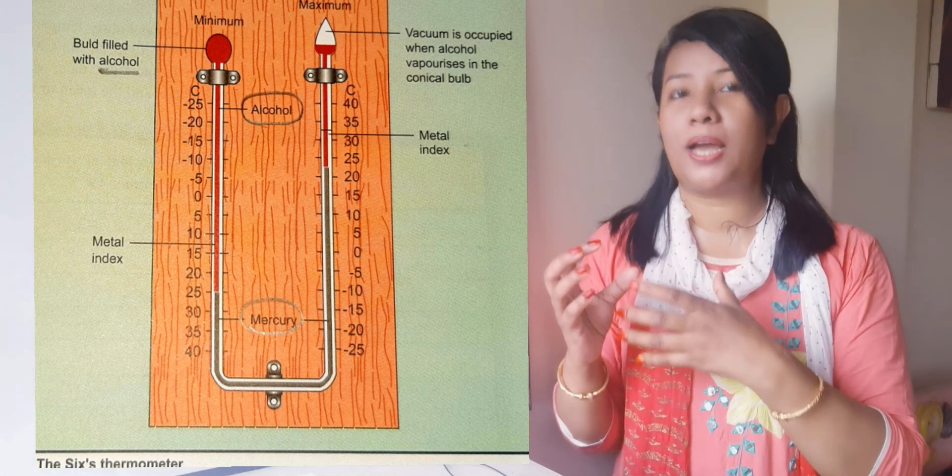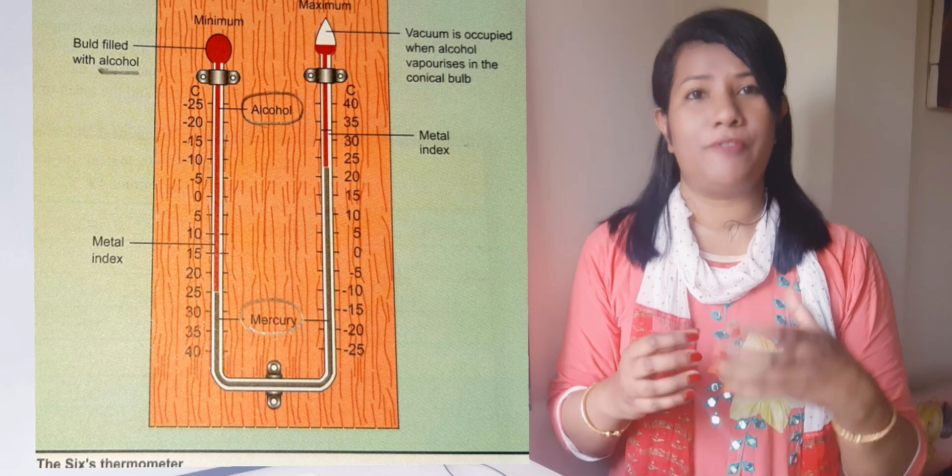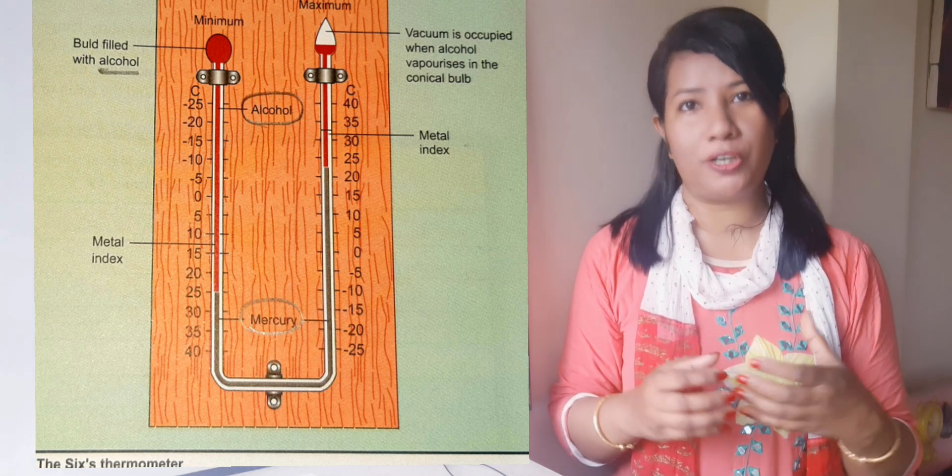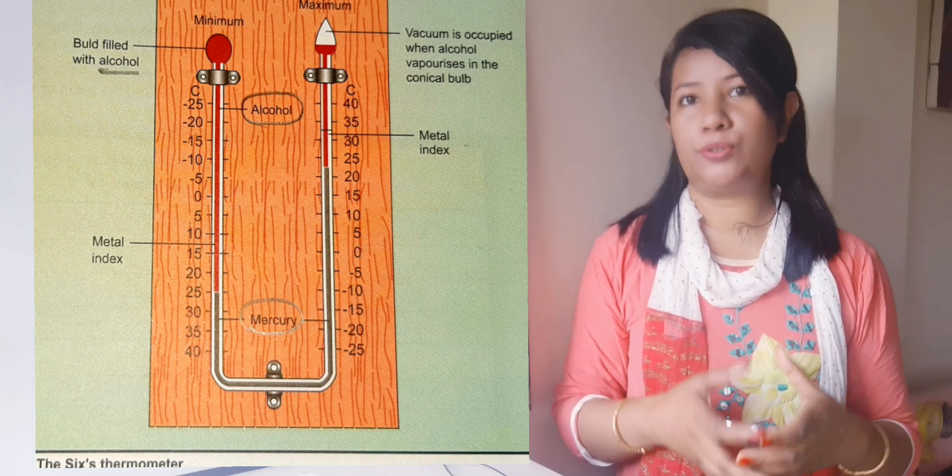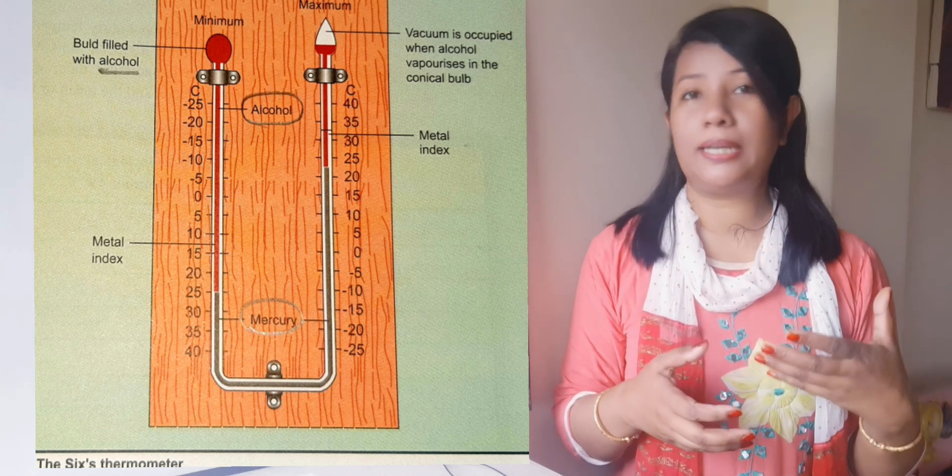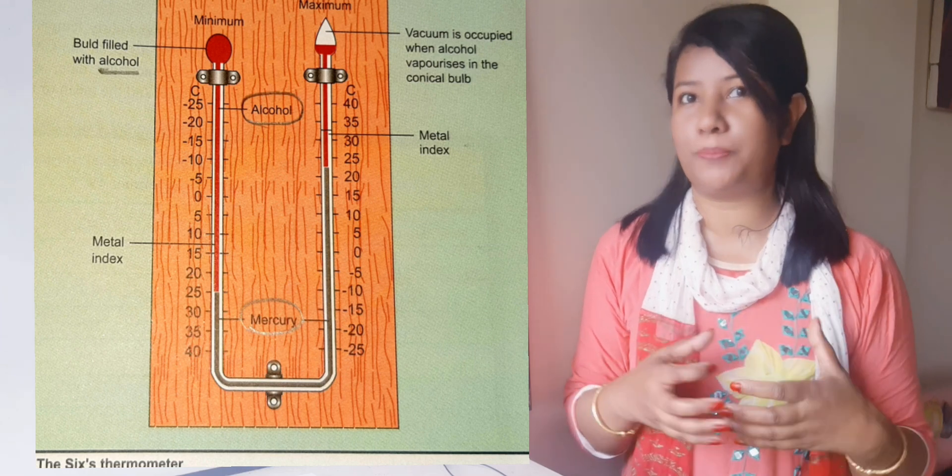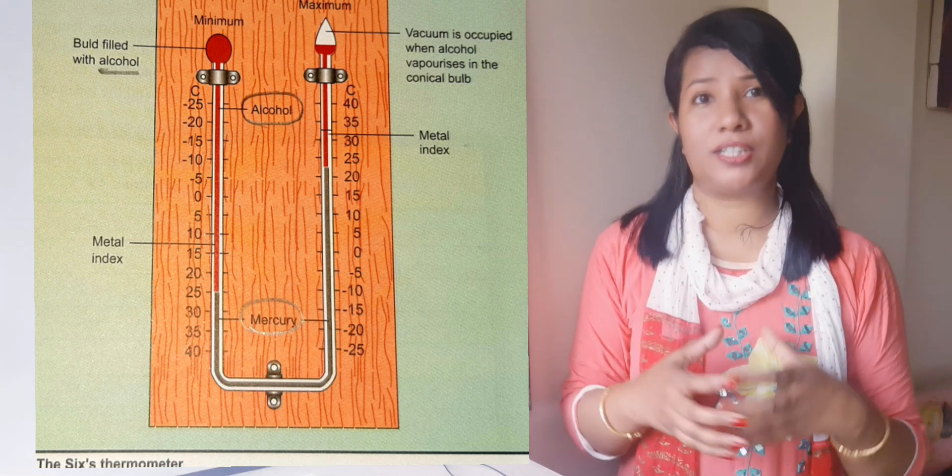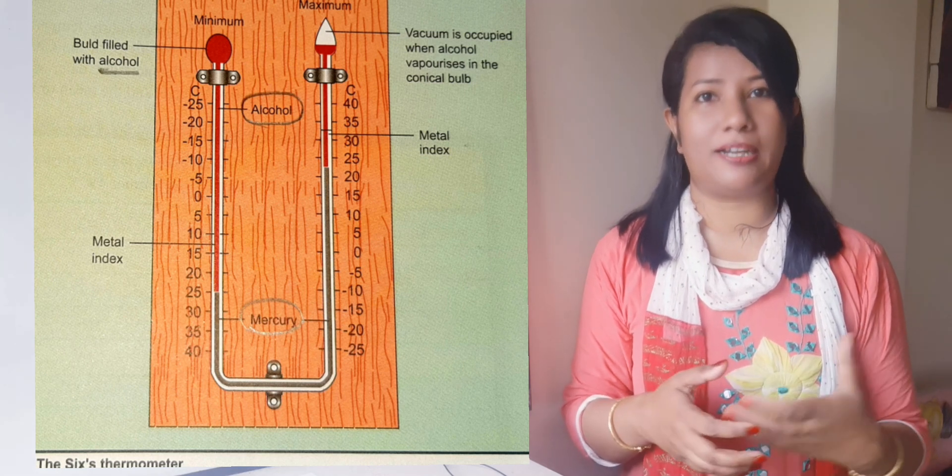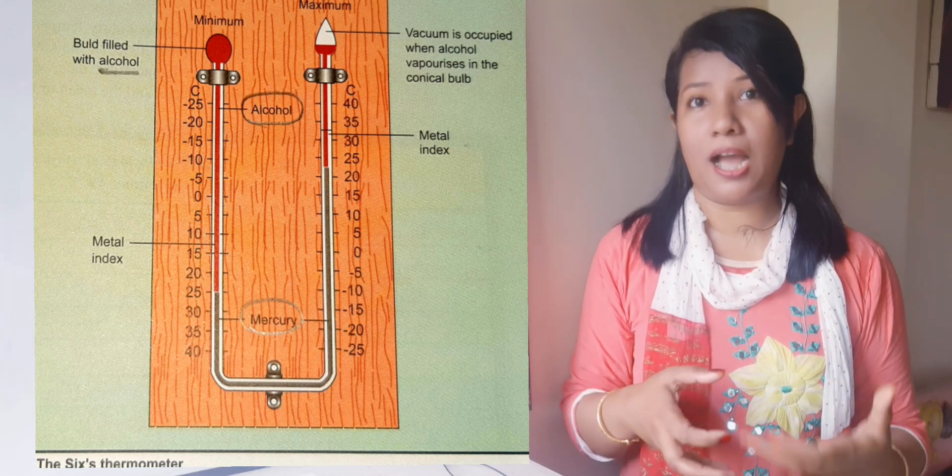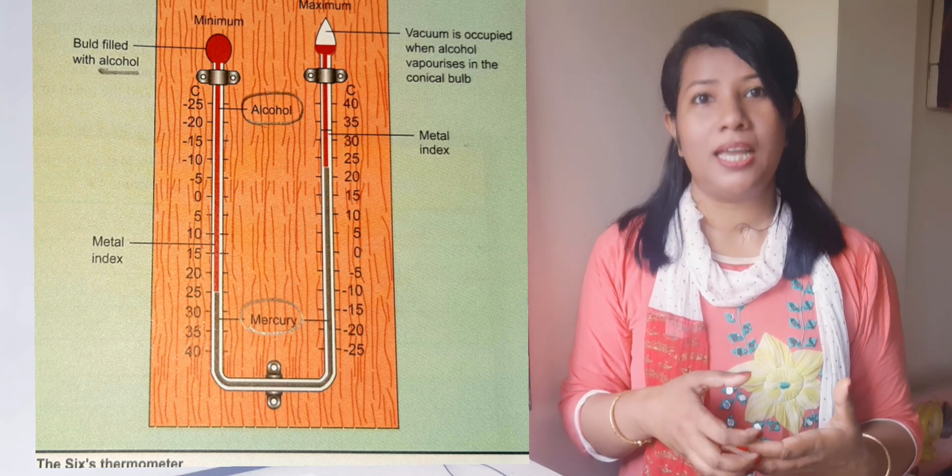So you need to draw the diagram and label it. It can help you more to understand the topics and the structure and function. So how is the minimum temperature measured using a Six's thermometer? What do you think?